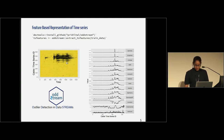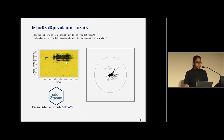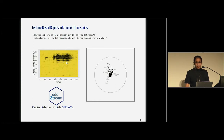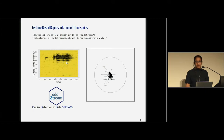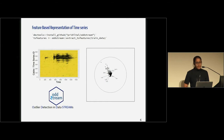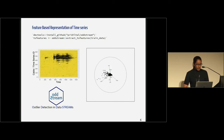By extracting features, what we are actually trying to do is converting our original problem into a high-dimensional problem. Altogether I have 14 features, so I'm getting a high-dimensional dataset with 14 dimensions. Each point of this high-dimensional space is corresponding to a single time series in my original collection. Altogether I have 600 time series, so here I'm getting 600 time points.